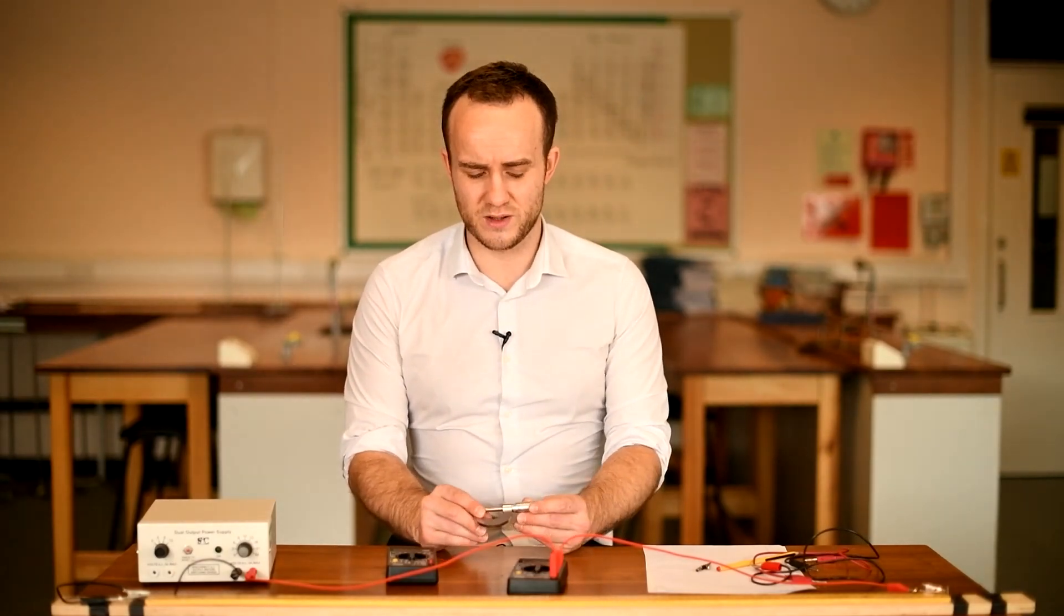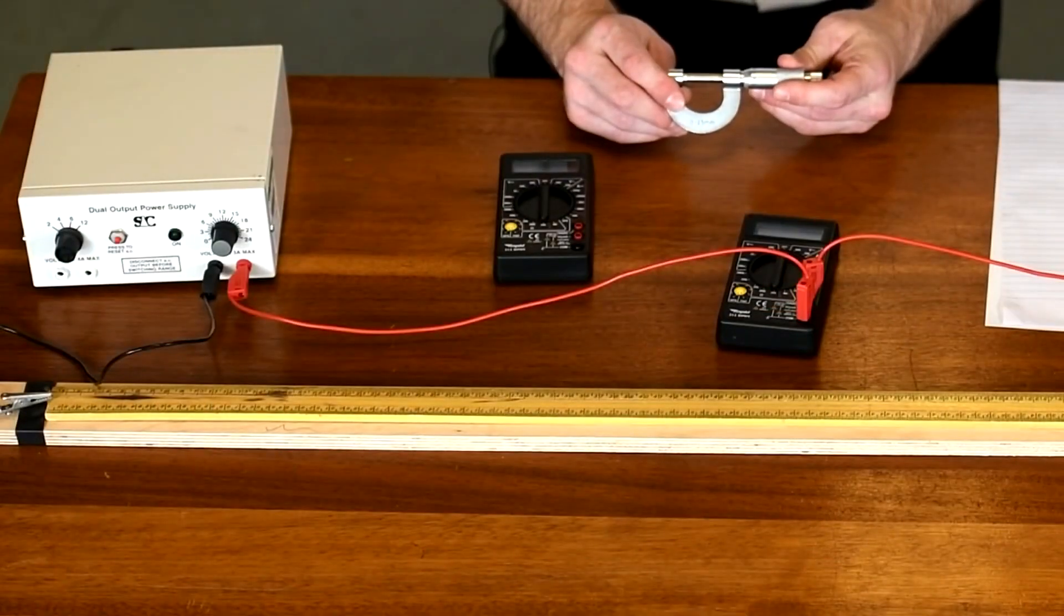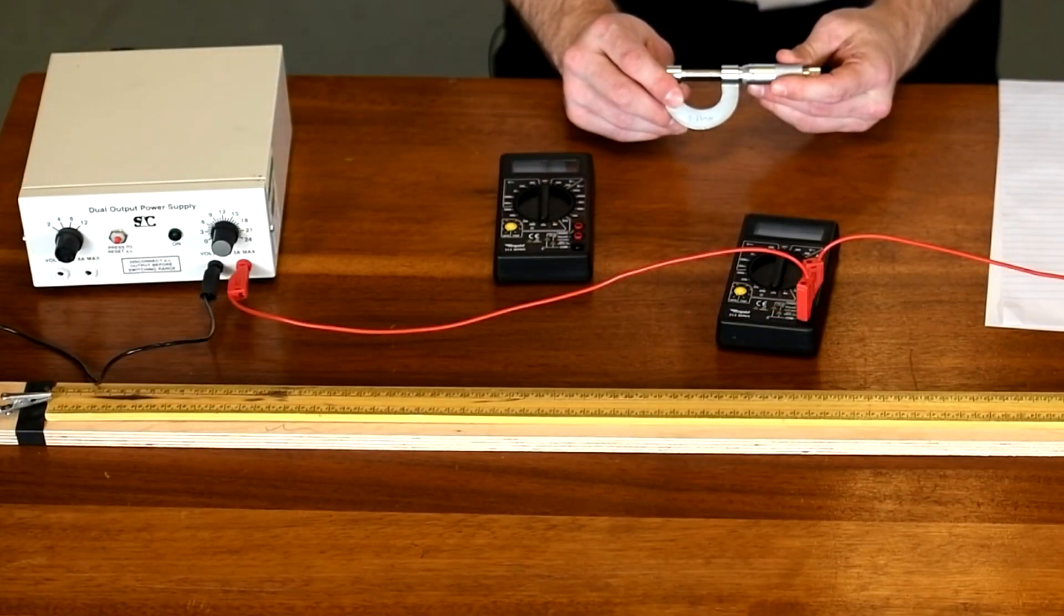Vernier caliper, again, tenths of millimetres, still not great. This, however, has a resolution of 0.01 millimetres, so a hundredth of a millimetre, far more precise, that's what we want.